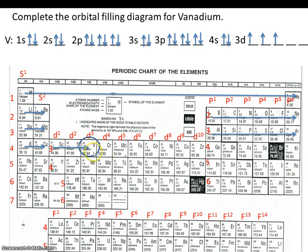Let's count back to the noble gas that precedes vanadium, or that comes before vanadium: 22, 21, 20, 19, 18. So the noble gas that comes before vanadium is argon.